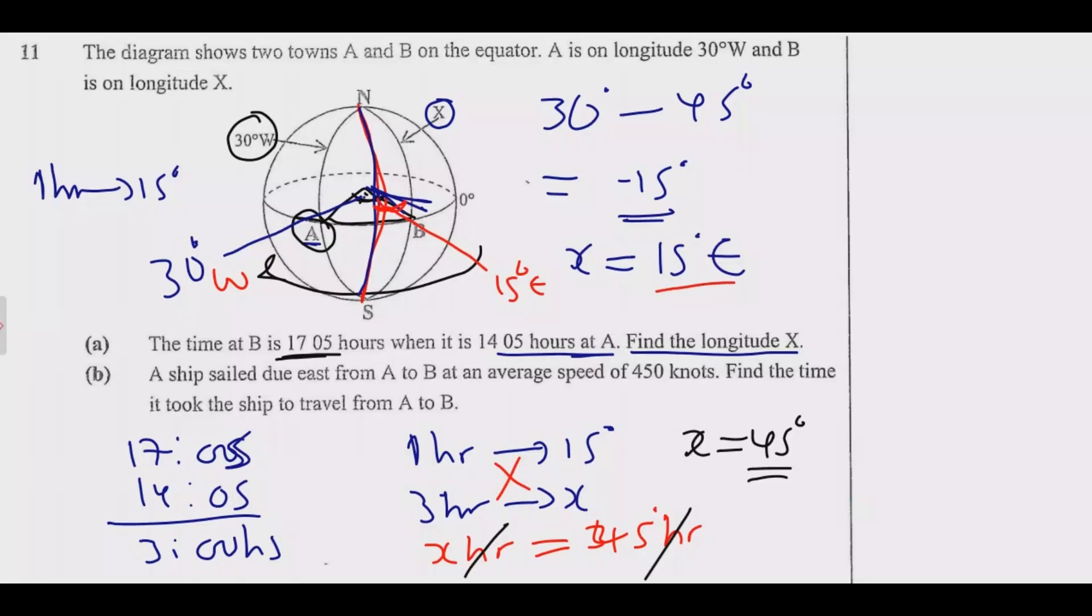The value of X is 15 degrees east. Then question B: a ship sailed due east from A to B at an average speed of 450 knots. Find the time it took the ship to travel from A to B. We are looking for the time it took. We have the speed, and since we know the difference in degrees along the great circle, we can find the distance.